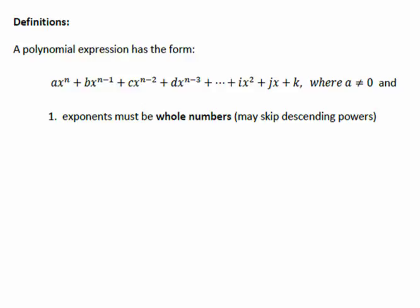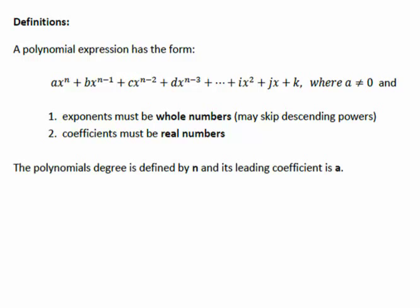Things we have to keep in mind about a polynomial: the exponents must be whole numbers, so this n value must be a whole number — whether it's 7, 6, 5, etc. The coefficients, the numbers in front, must be real numbers. A polynomial is defined by its n value and its leading coefficient a. It's that beginning piece of the polynomial expression that defines it and gives us some information.